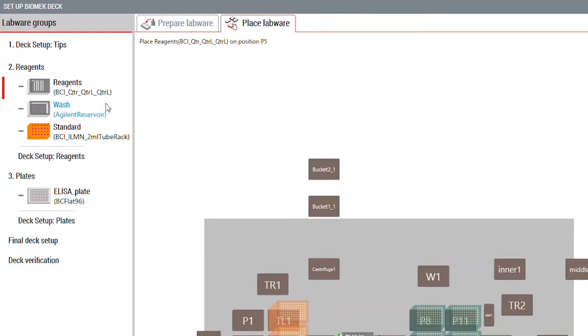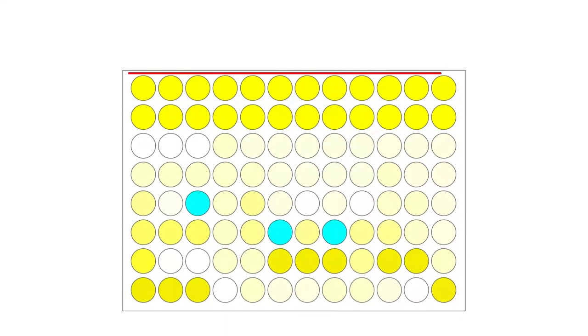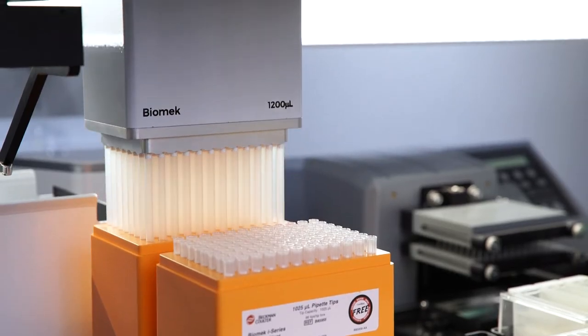Wash steps are repeated between each step of ELISA to remove unbound material. Inadequate washing creates a saturated signal resulting from non-specific binding. Manual washing is time-consuming and cumbersome.